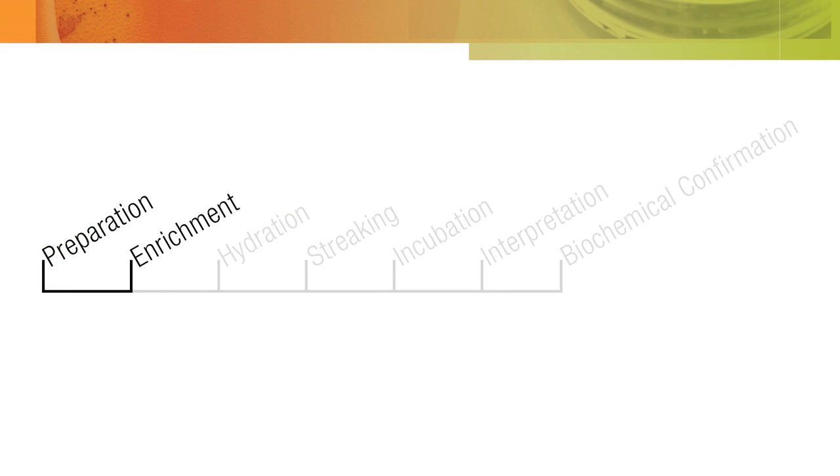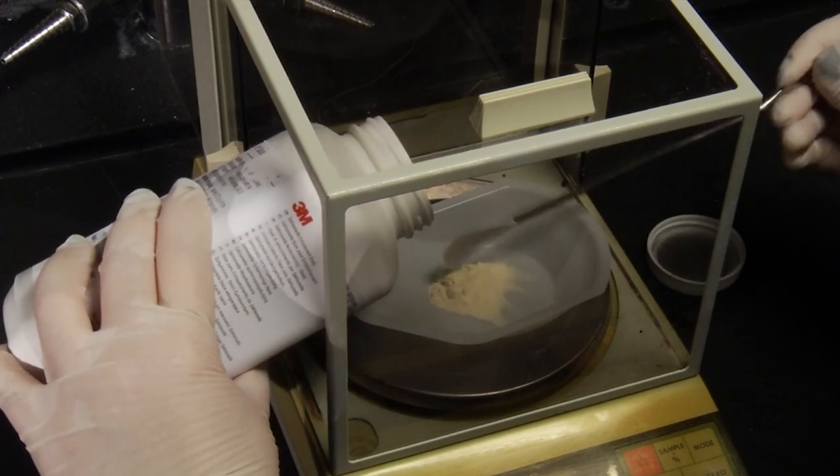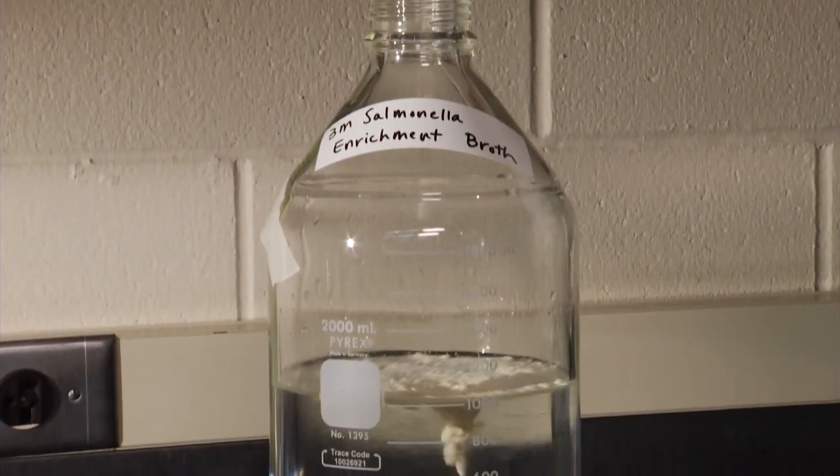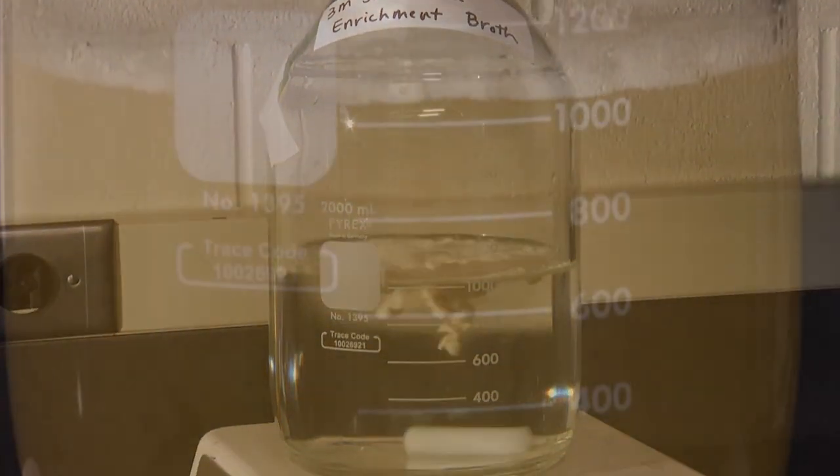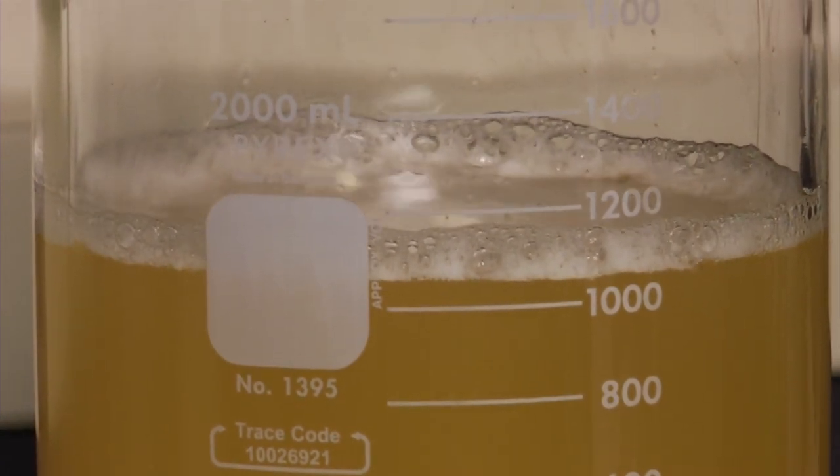The next step is the enrichment procedure. In order to prepare 1 liter of 3M Salmonella enrichment base, weigh 37 grams of dehydrated base powder and add it to 1 liter of water. Follow the product instructions to mix, dissolve, and sterilize the media.